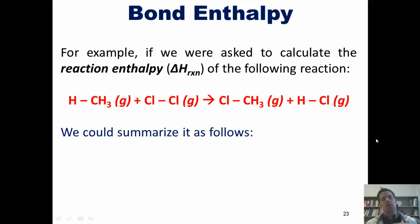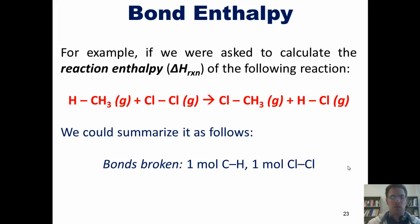We can thus say that going from left to right in this reaction, we break one mole of carbon-hydrogen single bonds and one mole of chlorine-chlorine bonds. As we go to the product side, we end up forming one mole of carbon-chlorine bonds and one mole of hydrogen-chlorine bonds.